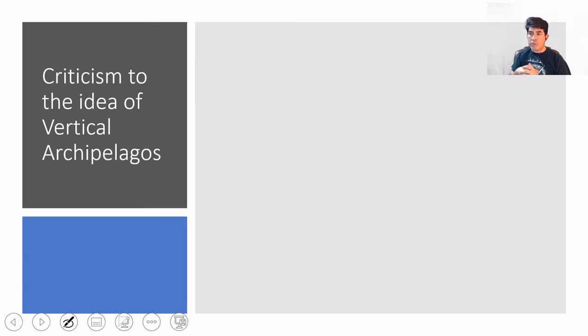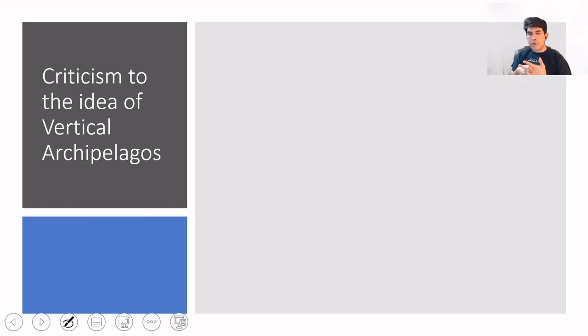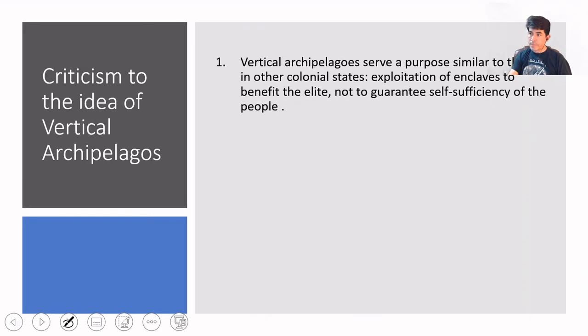To conclude, there is some criticism to the idea of the vertical archipelago. It is an idea widely accepted by anthropologists, historians, and sociologists working in the Andean area, particularly the southern region. However, there are criticisms that can be made to John Murra's theory. The first criticism is that the vertical archipelago served a purpose similar to those in other colonial states — the exploitation of enclaves was done to benefit an elite and not to guarantee the self-sufficiency of the people.